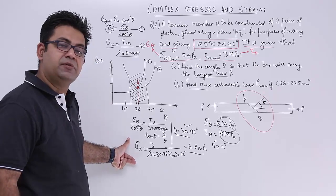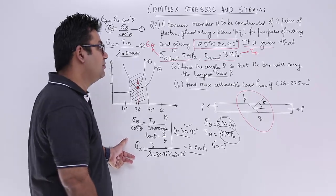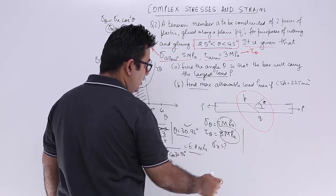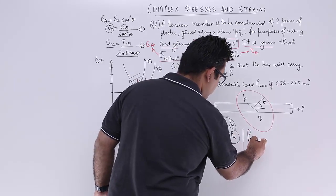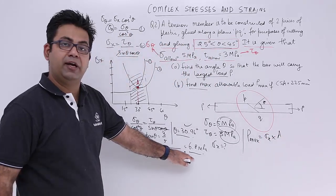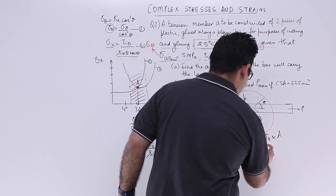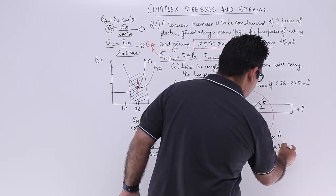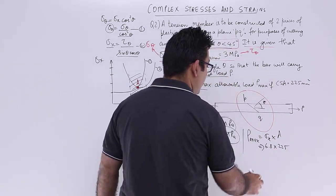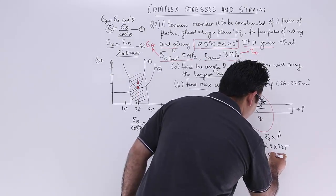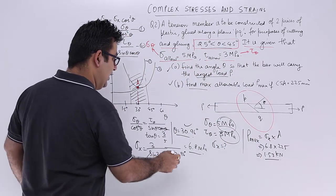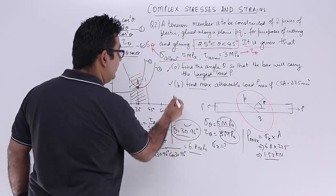That is the maximum axial stress that can be produced in such conditions as per this graph. Now we have the maximum sigma x. Corresponding to this maximum sigma x, I can find the maximum allowable load. So P max is sigma x into the cross section area: 6.8 MPa into 225 mm square. In kilo Newton, you will get the value as 1.53 kN.